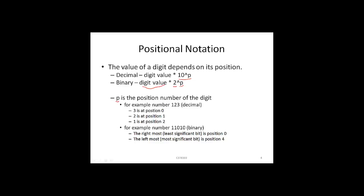P is the position number of the digit. For example, looking at the number 123: 3 is at position 0, 2 is at position 1, and 1 is at position 2. Continuing with a binary example, for binary number 11010: the rightmost 0 is position 0, 1 is position 1, the next 0 is position 2, the next 1 is position 3, and the leading 1 is position 4.